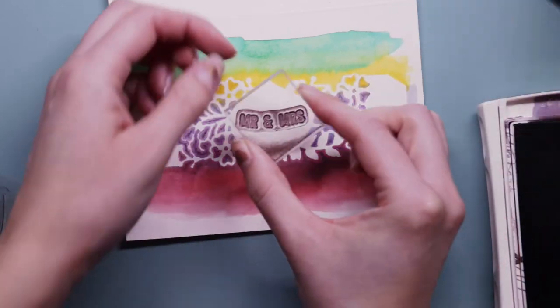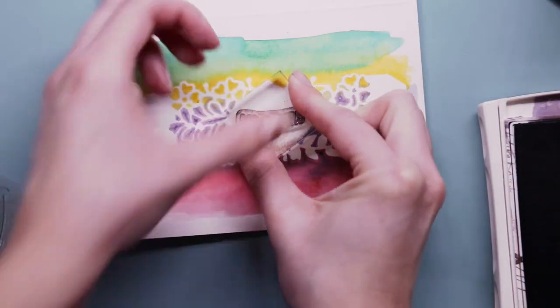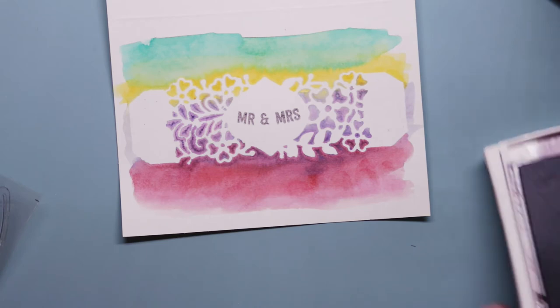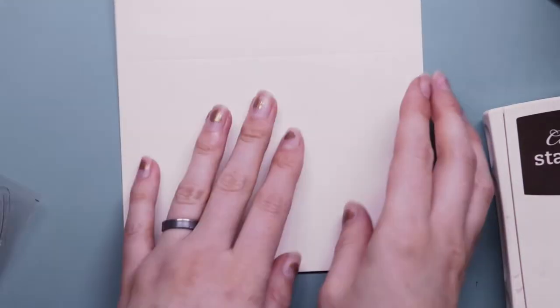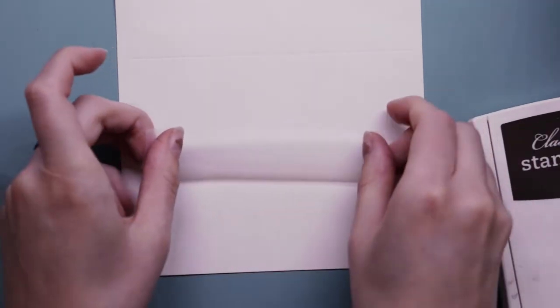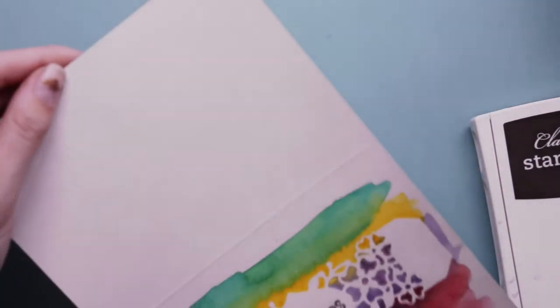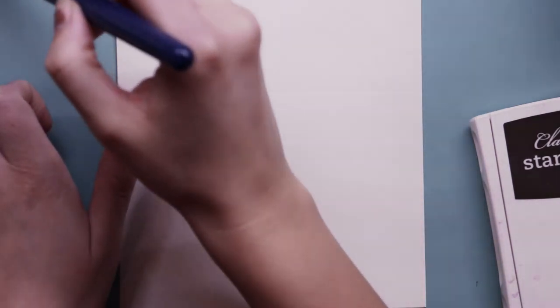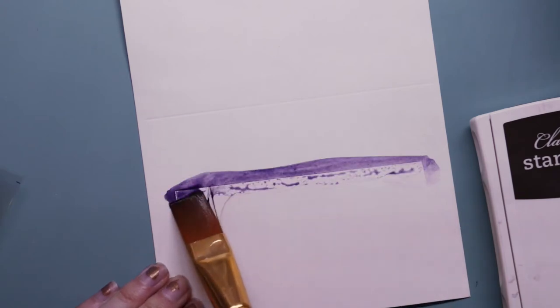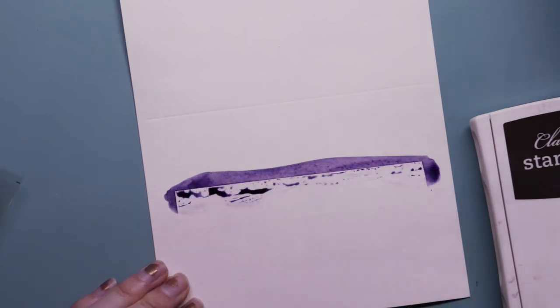I decided this would make a cute wedding card, so I just stamped a little Mr. and Mrs. in that little white area. And on the inside, I thought I would take it another step further because I'm having so much fun with this technique. And I'm going to add the inside sentiment, but I'm also going to surround it with watercolor using this masking technique.